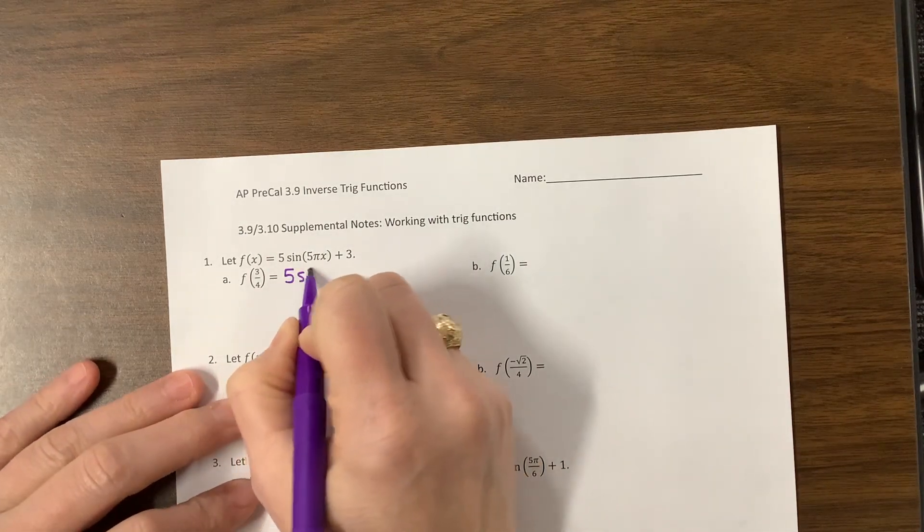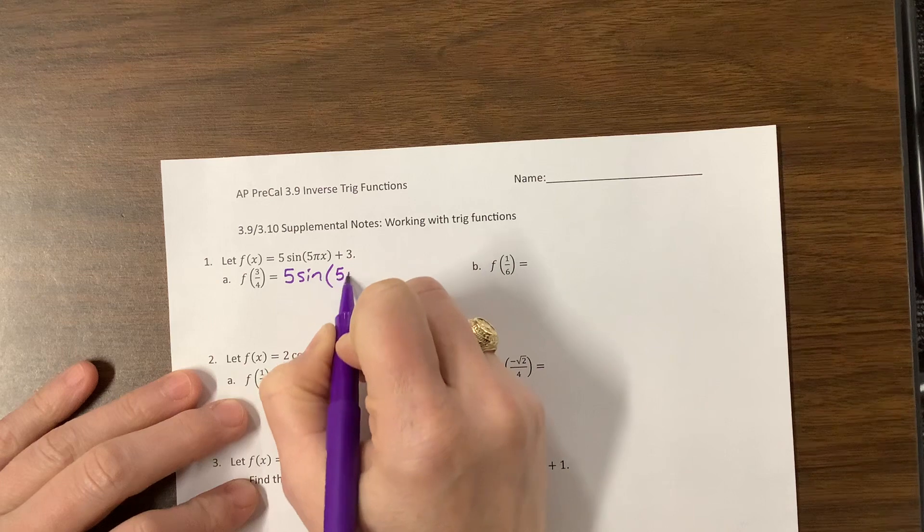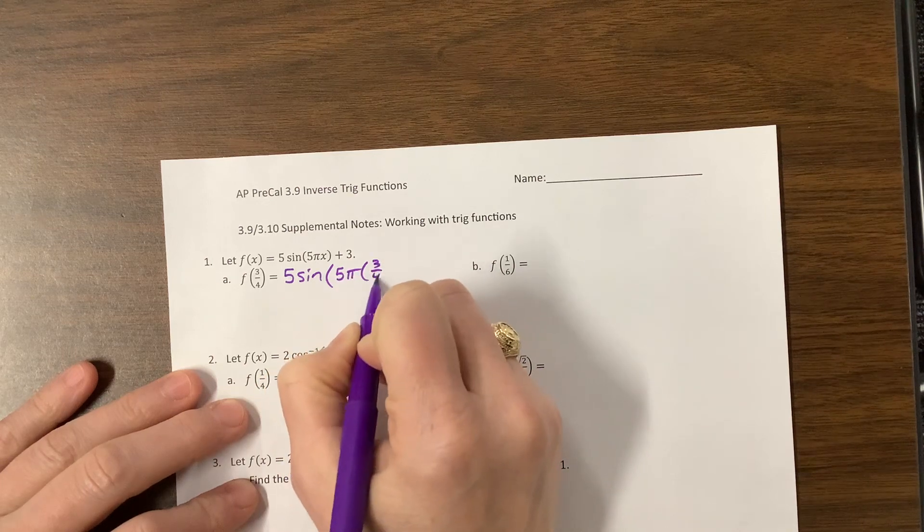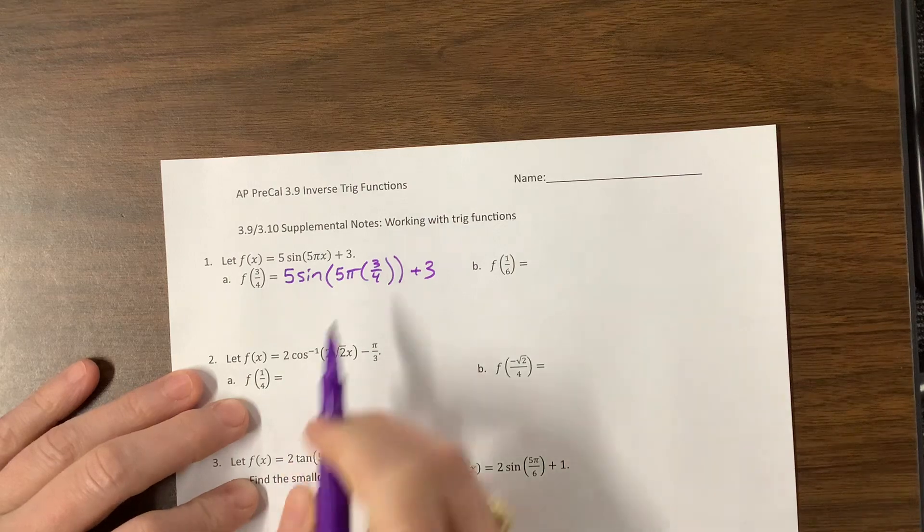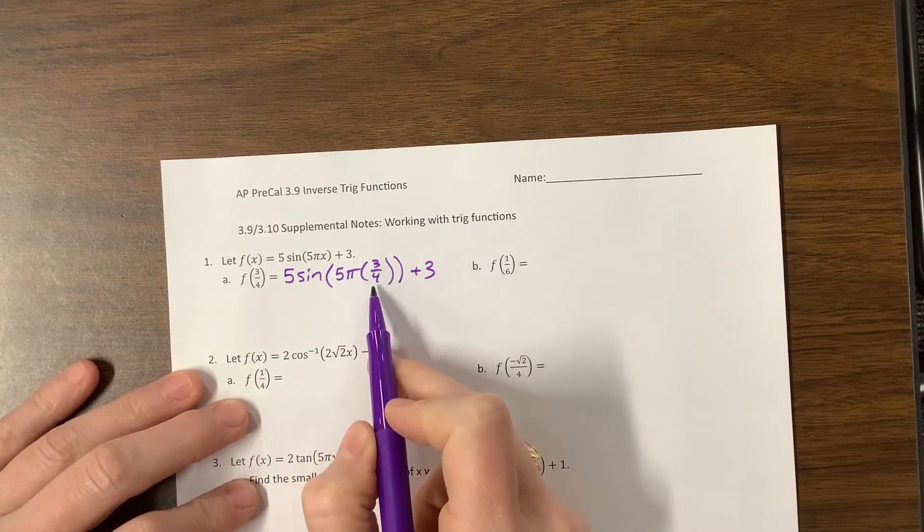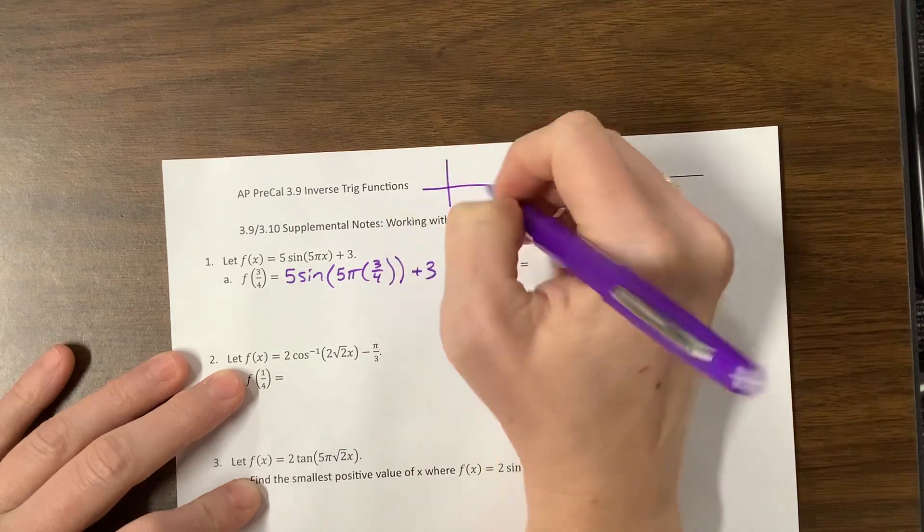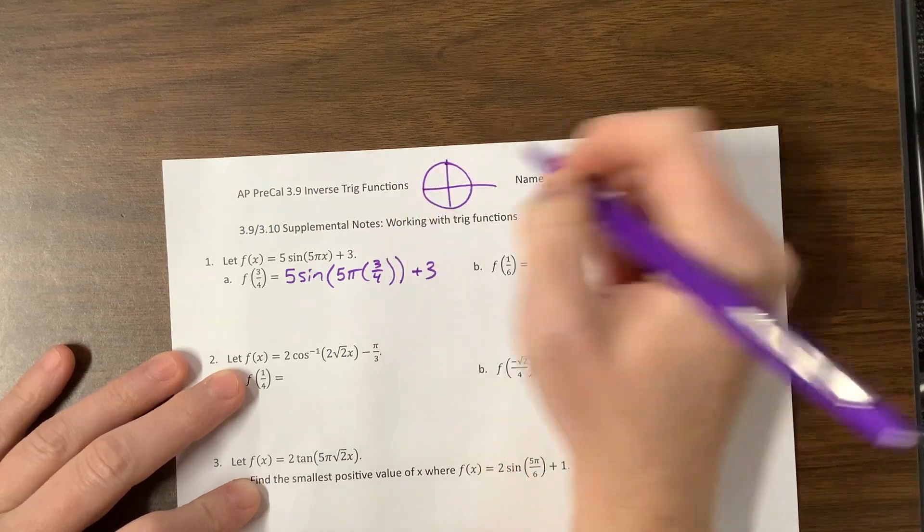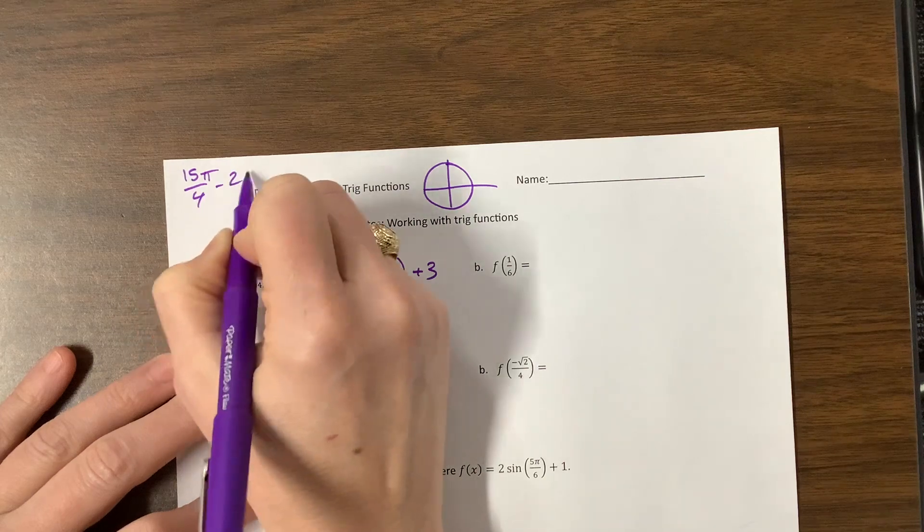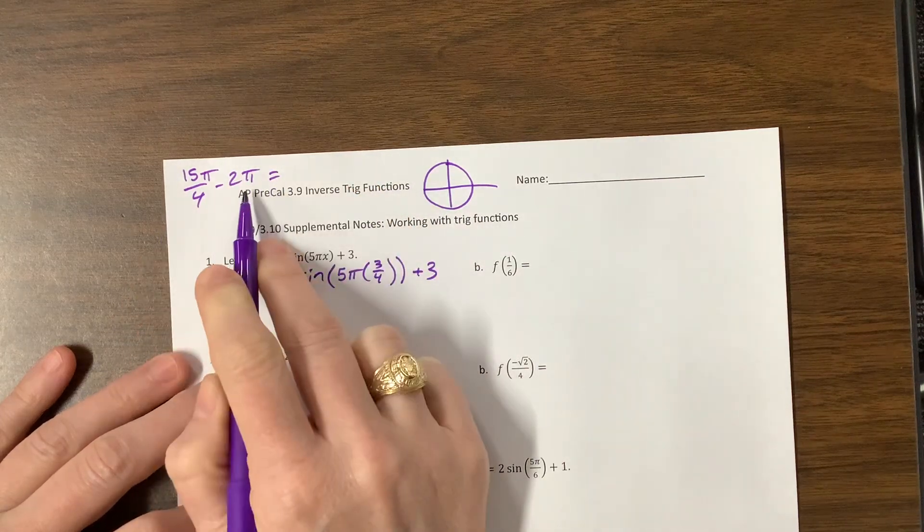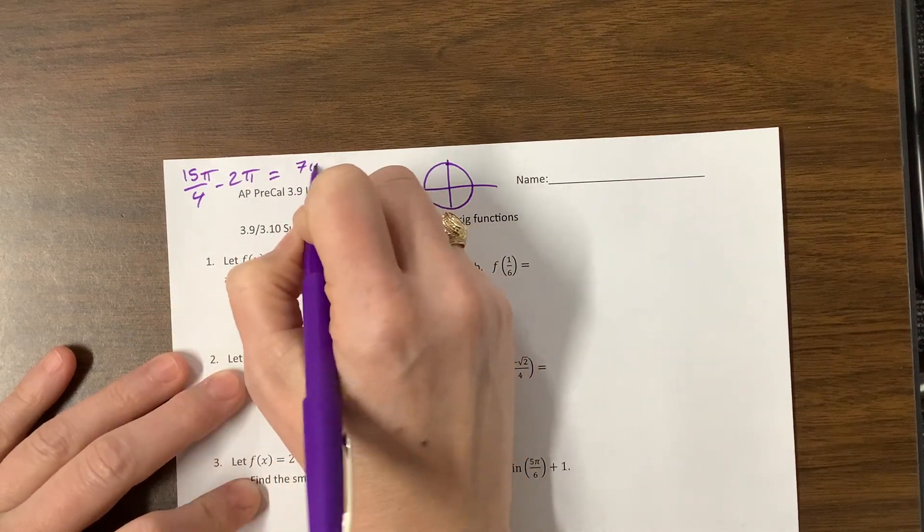I have 5 sine of 5π times 3/4 plus 3. When I plug this gives me 15π/4, which is not on the unit circle, but if you think 15π/4, I can subtract away 2π. That's 8π/4, so that gives me 7π/4. So it would be the angle that goes all the way around once and then stops.